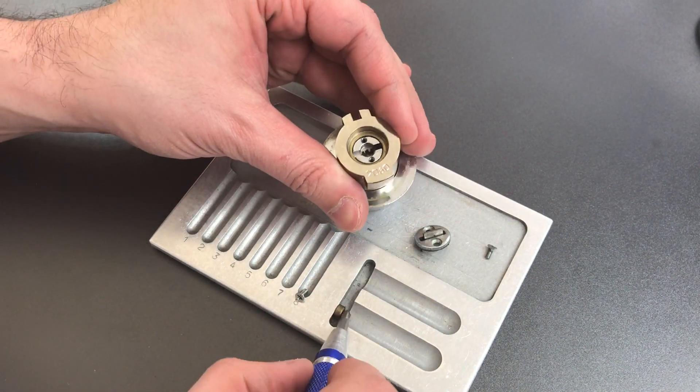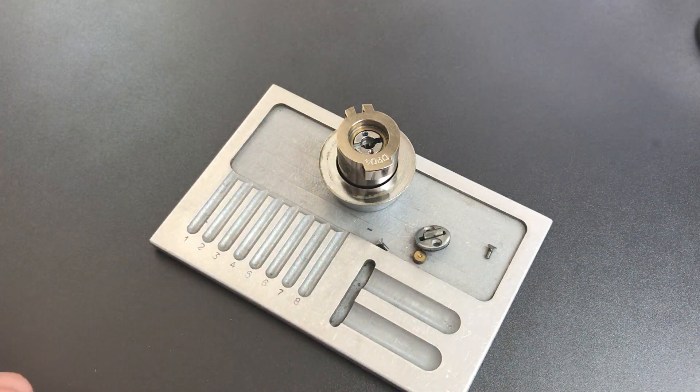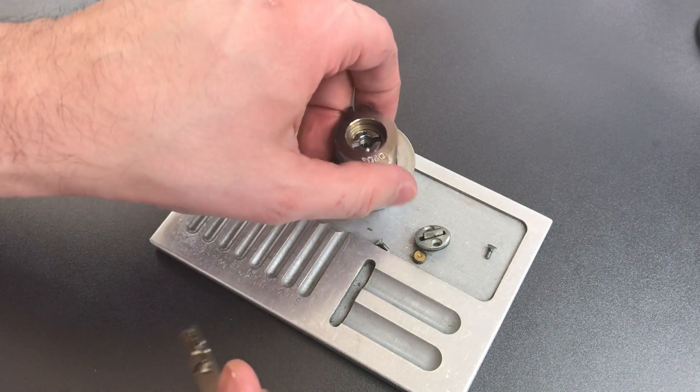Looks like we should just need a key and the follower, and hopefully this will come apart without too much drama.